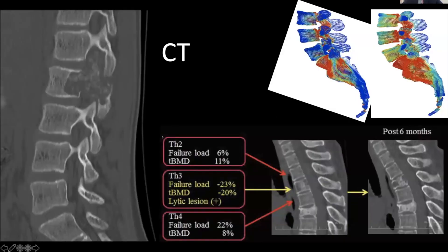CT depicts cortical bone very well. You also have some assessment of the trabecular architecture of the bone. For example, here you can see an infiltrative lesion. For orientation, you have your vertebral bodies, your pedicles, your posterior elements including your lamina and the pars articularis, depending on the orientation of the CT.